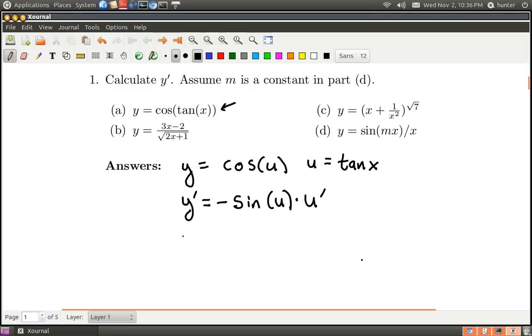Okay, and now you can just finish up by putting in what u is and what u prime is. So u was tan, so I'll just write tan back here. And so if u is tangent, then u prime is the derivative of tangent. And on the previous quiz, we learned that u prime is secant squared. Alright, so this is the answer to 1a, negative sine of tan x times secant squared x.